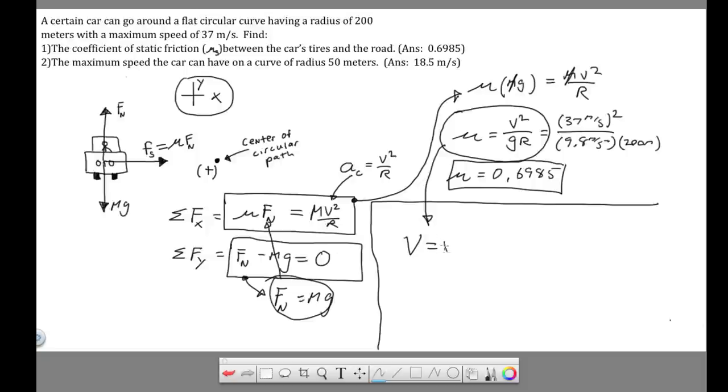So v is going to be equal to the square root of mu g r. The coefficient remained the same. The only thing that would change the coefficient is if we had a different surface or a different set of tires. The coefficient is a property of two things, it's the two objects that are in contact with each other. Okay, so the coefficient is 0.6985, gravity is 9.8, and the radius of the circle is now 50 meters, and this gives us a velocity of 18.5 meters per second.